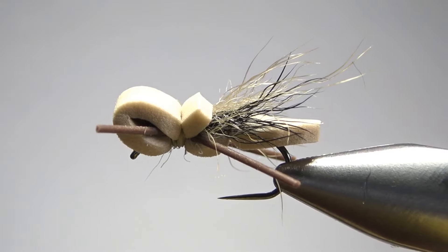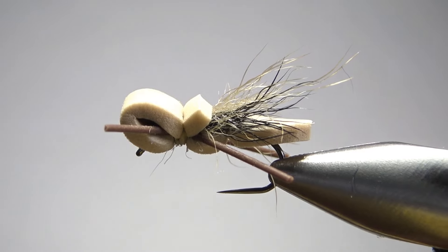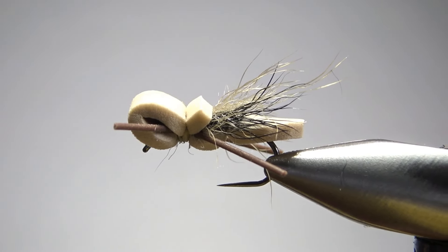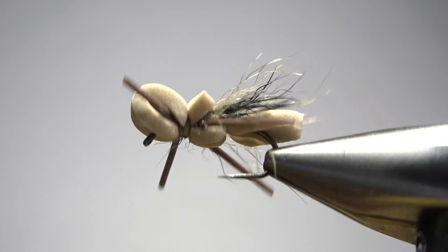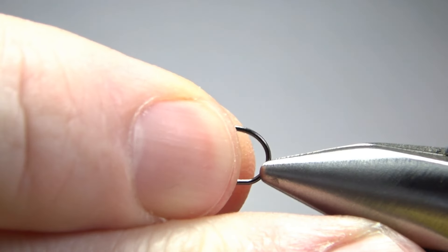So there's one in the vise, a pretty simple little foam pattern called the Chugger, which I guess it's got to be a hopper. I can't think what else it is other than a generic terrestrial attractor pattern. But for a hopper, it's kind of small.